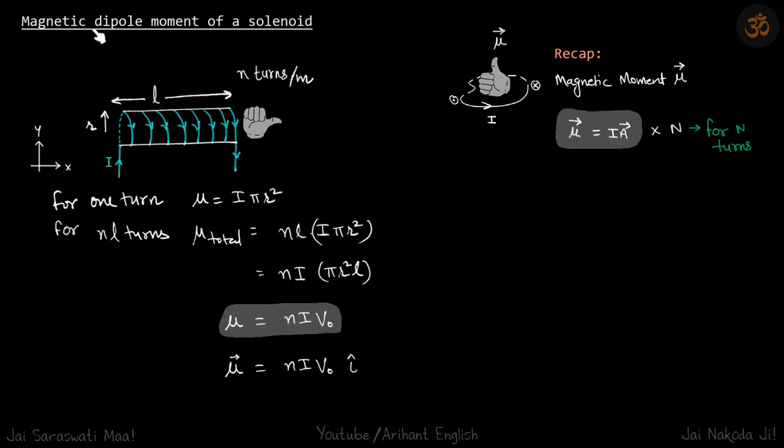Now let us calculate the magnetic dipole moment of a solenoid. First, we recap: the magnetic moment is represented by μ.